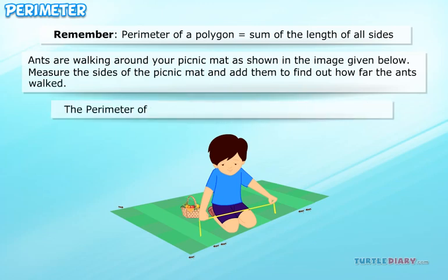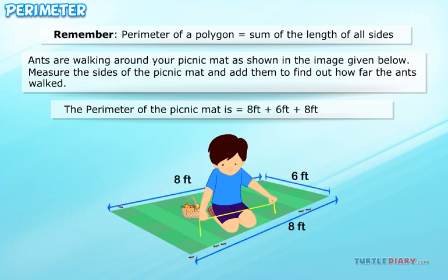The perimeter of the picnic mat is 8 feet plus 6 feet plus 8 feet plus 6 feet equals 28 feet.